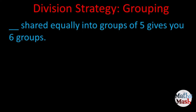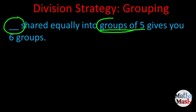So we've got here: shared equally into groups of five gives you six groups. We don't know how many are being shared equally, but we do know groups of. That key phrase — groups of — tells you that the number right after is the divisor. And we have six groups.